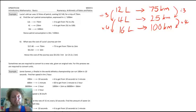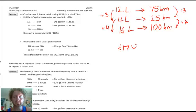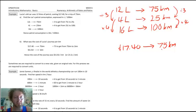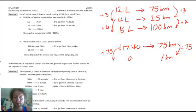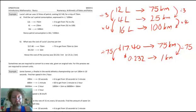Part B: find the cost of Lucia's journey per kilometre. This only involves cost and kilometres. The cost was $17.40 for 75 kilometres. I want the cost per 1 kilometre. To turn 75 into 1, I divide both sides by 75. So $17.40 ÷ 75 = $0.232 per kilometre.